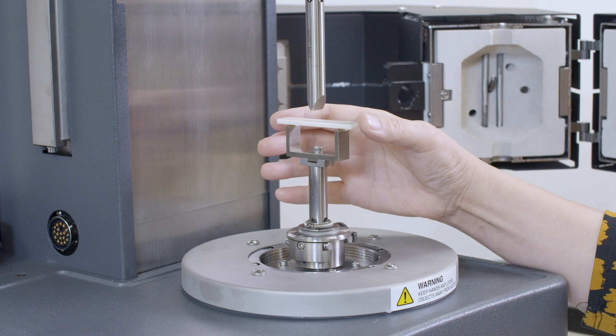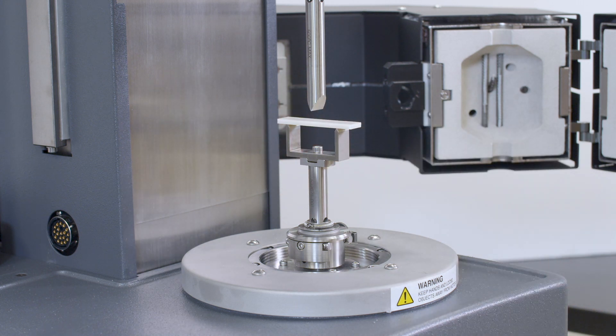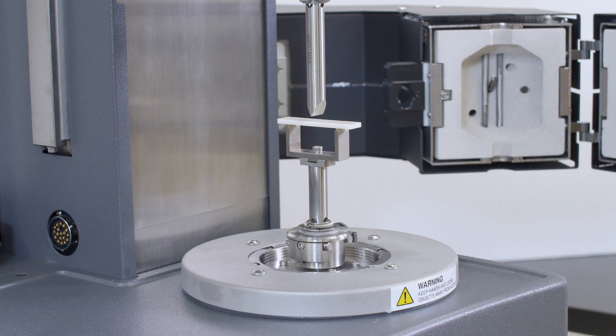Place the sample onto the bottom stage. Lower the upper clamp until it is fully in touch with the sample. The three-point bending clamp is now ready for testing.